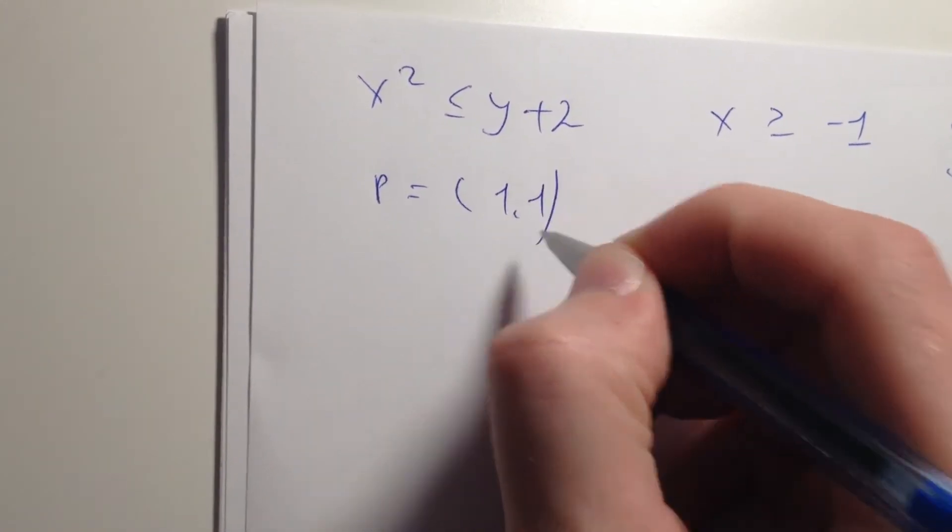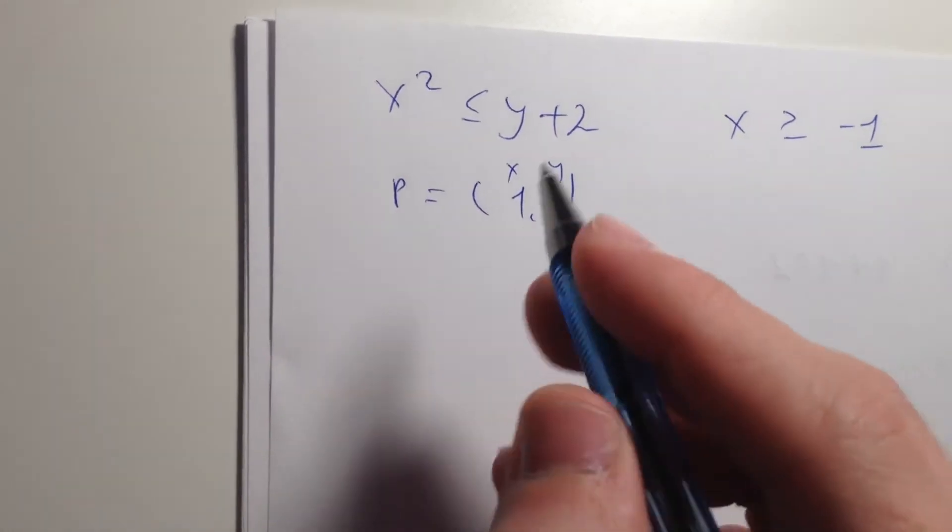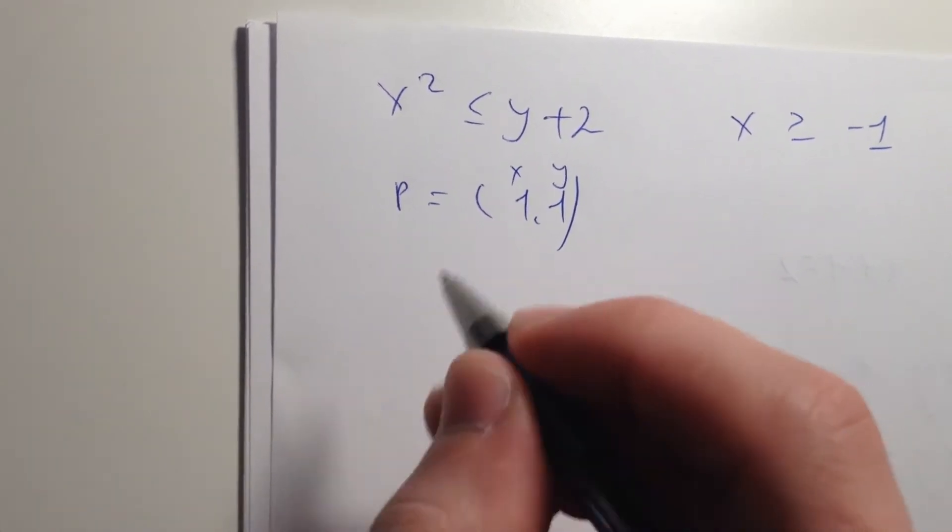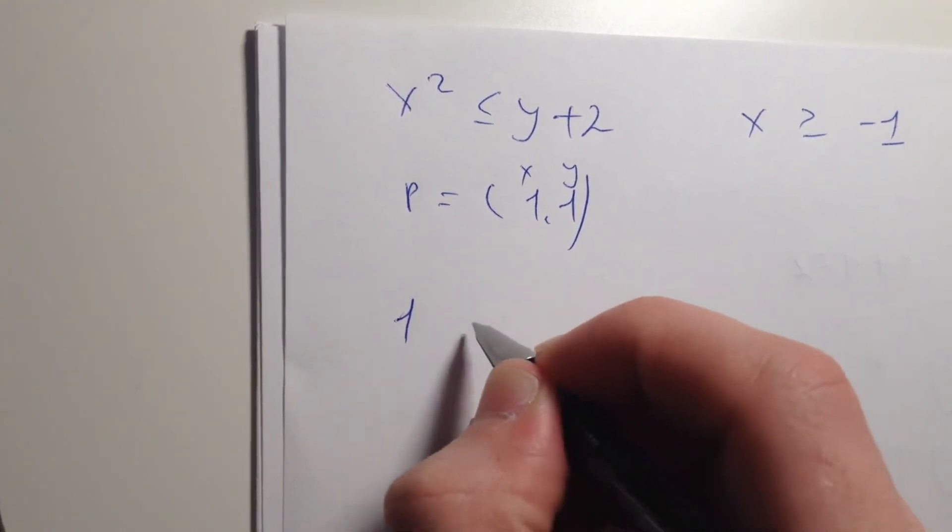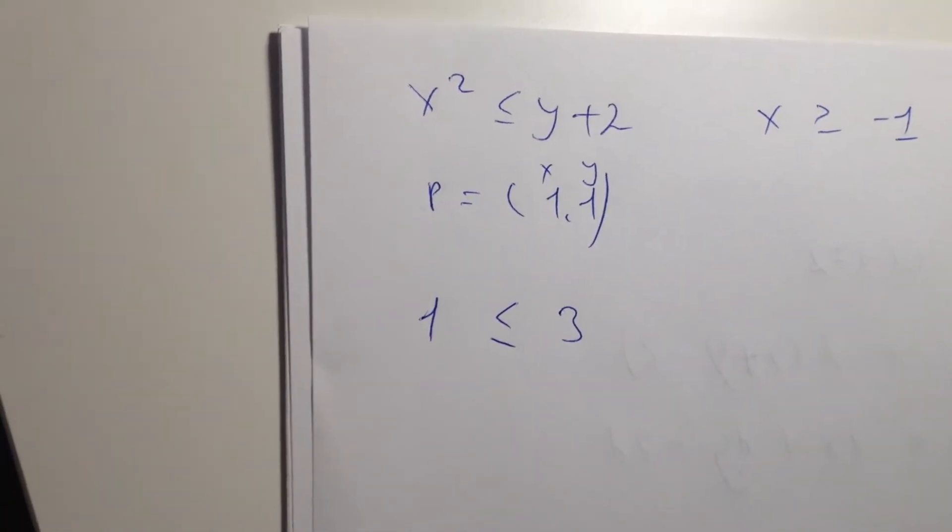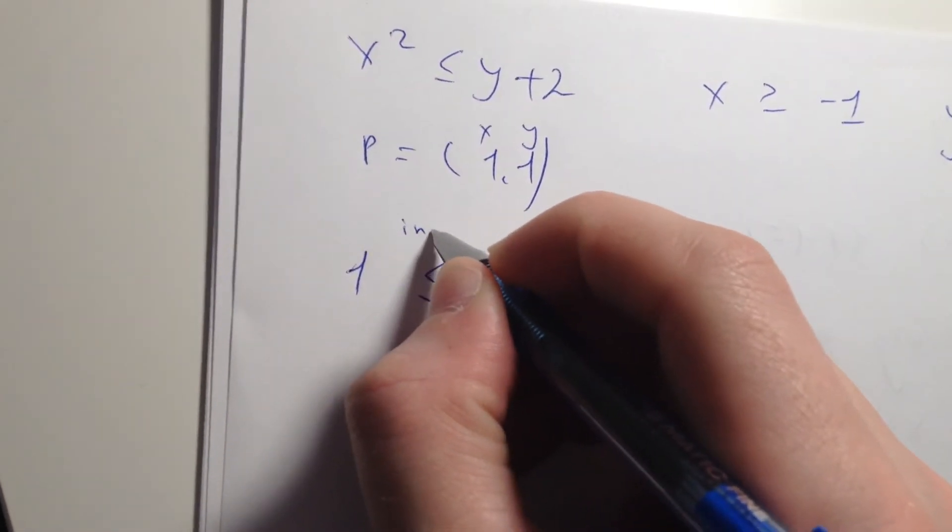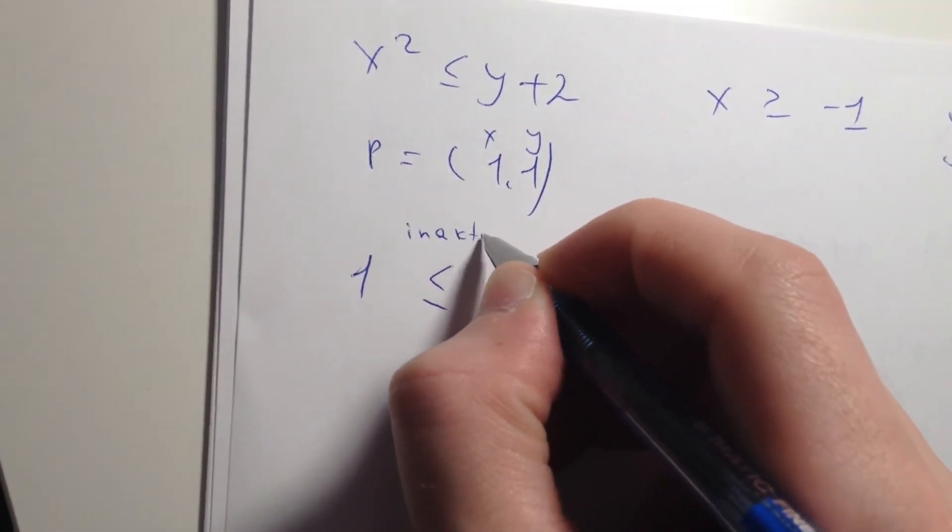For example, we have found our points (1, 1), means that x is 1 and y is 1. So if our points are (1, 1), then we can just say 1 is less or equal to 3. It's true, so it's inactive.